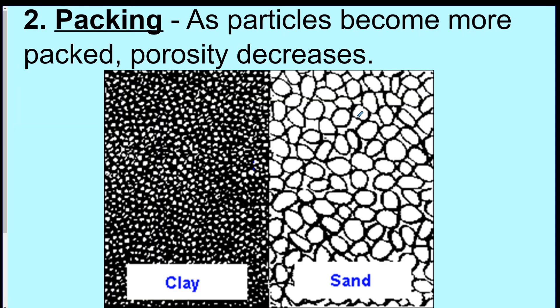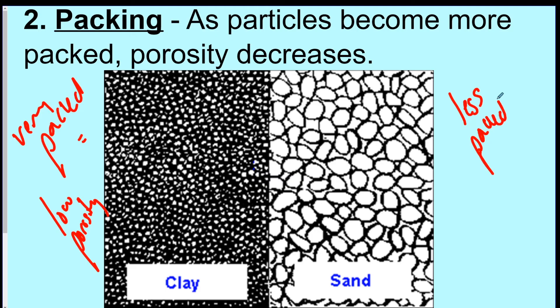Packing. As particles become more packed together, the porosity decreases. If you smush stuff together, there's going to be less space in between them. It makes sense. So if you have really small particles that are very packed, you get low porosity. If you get less packed, you have higher porosity. Remember, porosity is less space. Less packed together, more space.